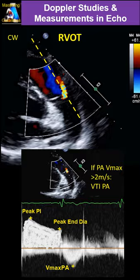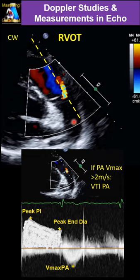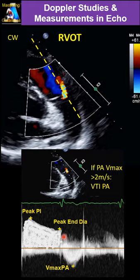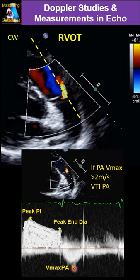Then we go to the RVOT — modified or non-modified, either will be correct. Put the continuous Doppler cursor exactly on the color Doppler signal. If there is any PI, align it parallel to that. If we have significant PI, we measure peak PI, end-diastolic PI, and peak V-max of the pulmonary artery continuous Doppler. If V-max is over 2 m/s, we do VTI.